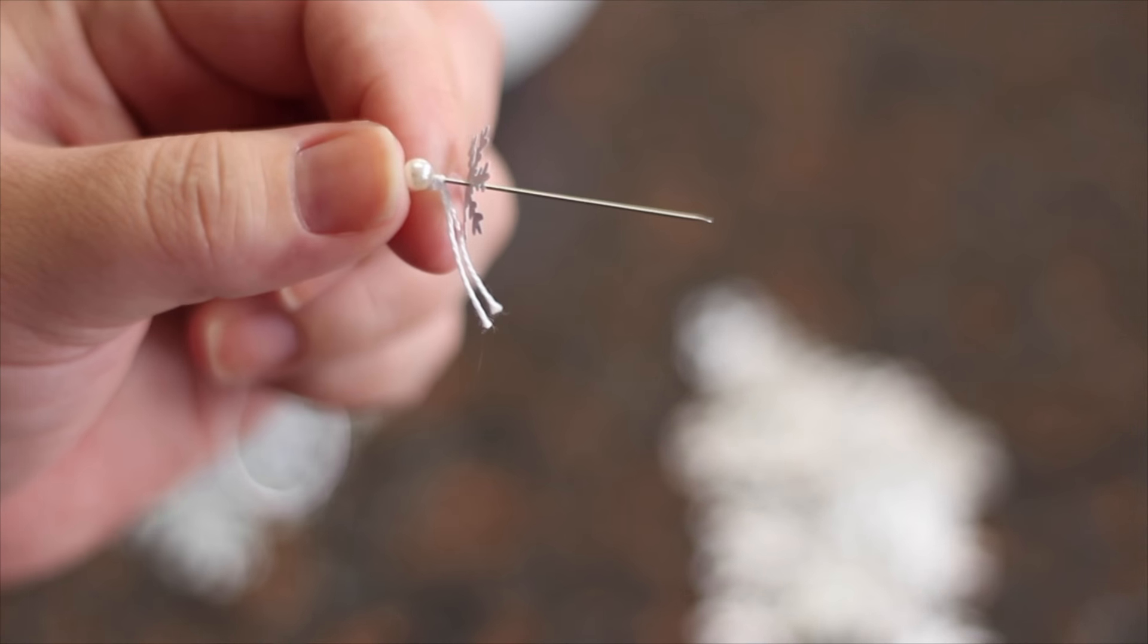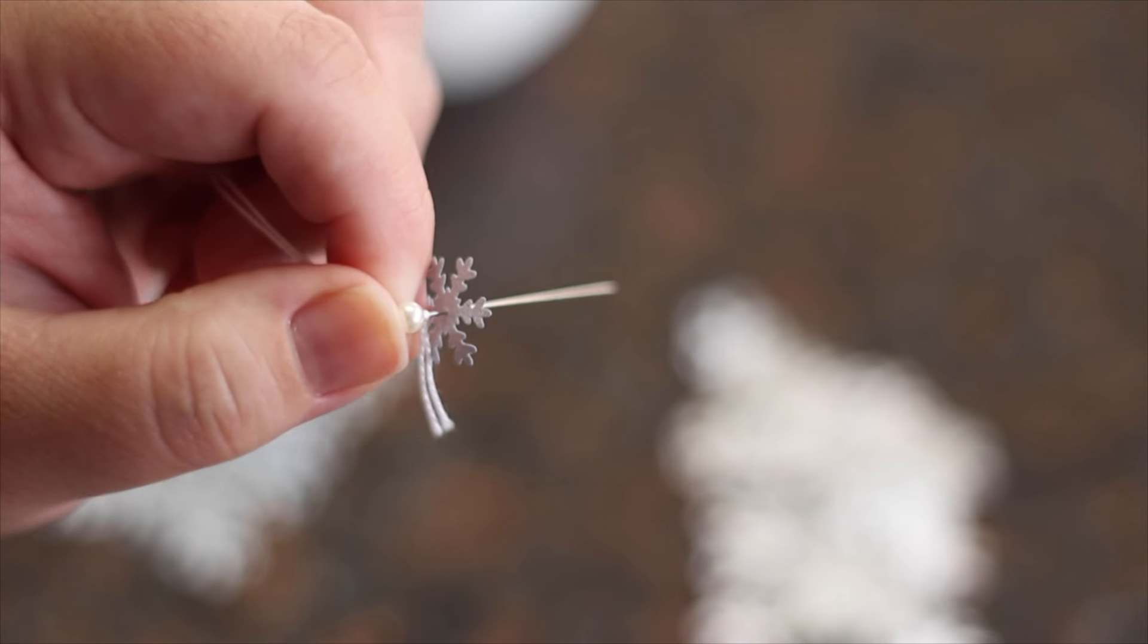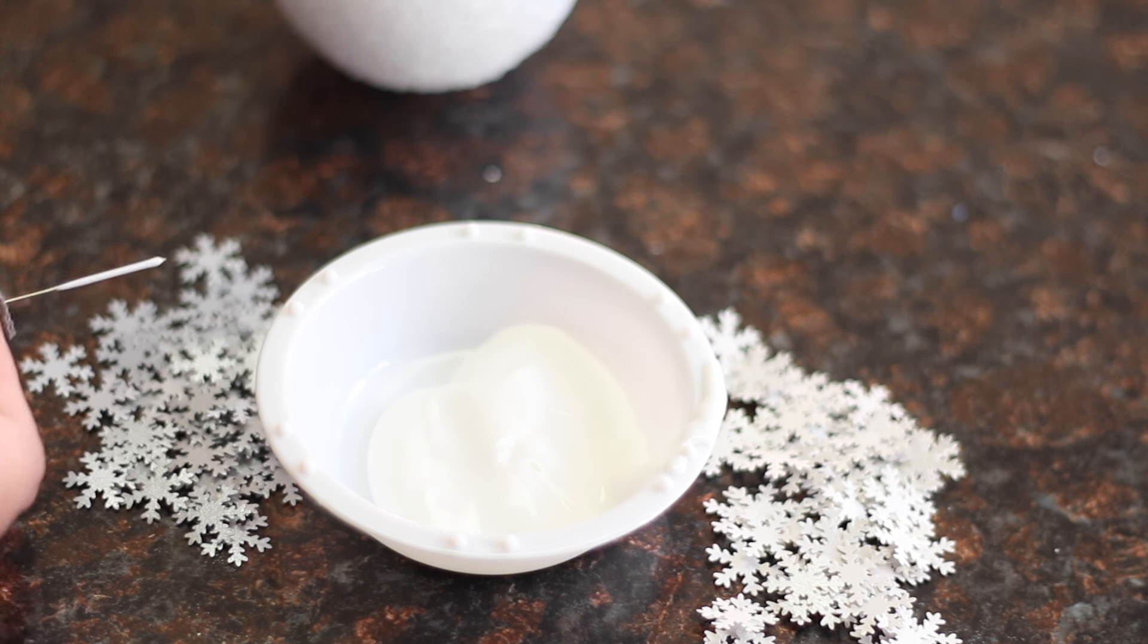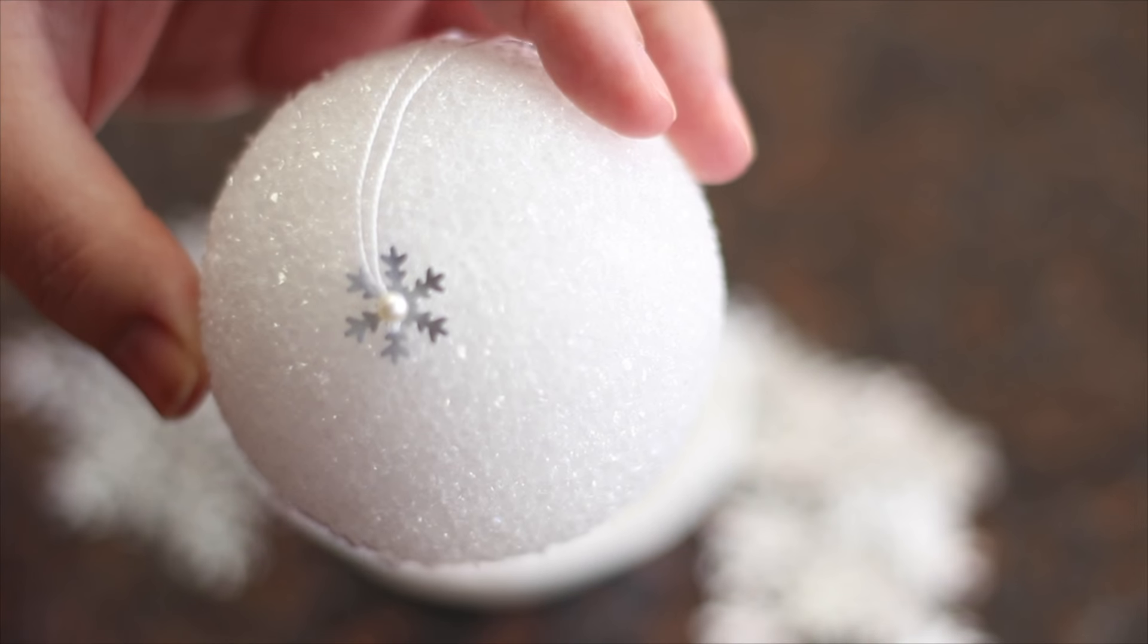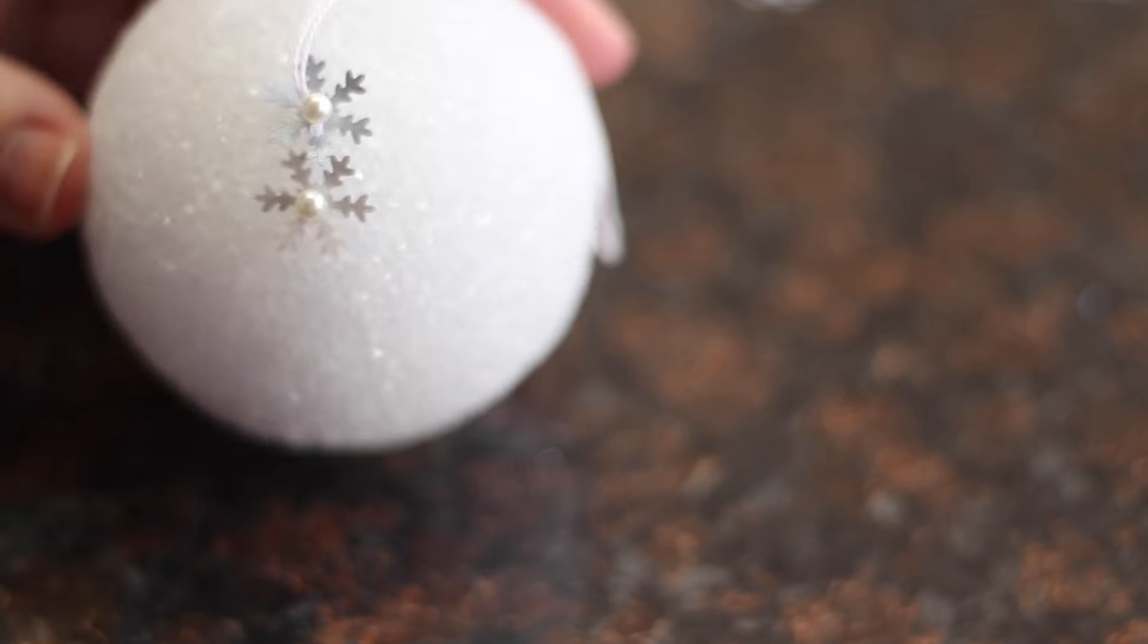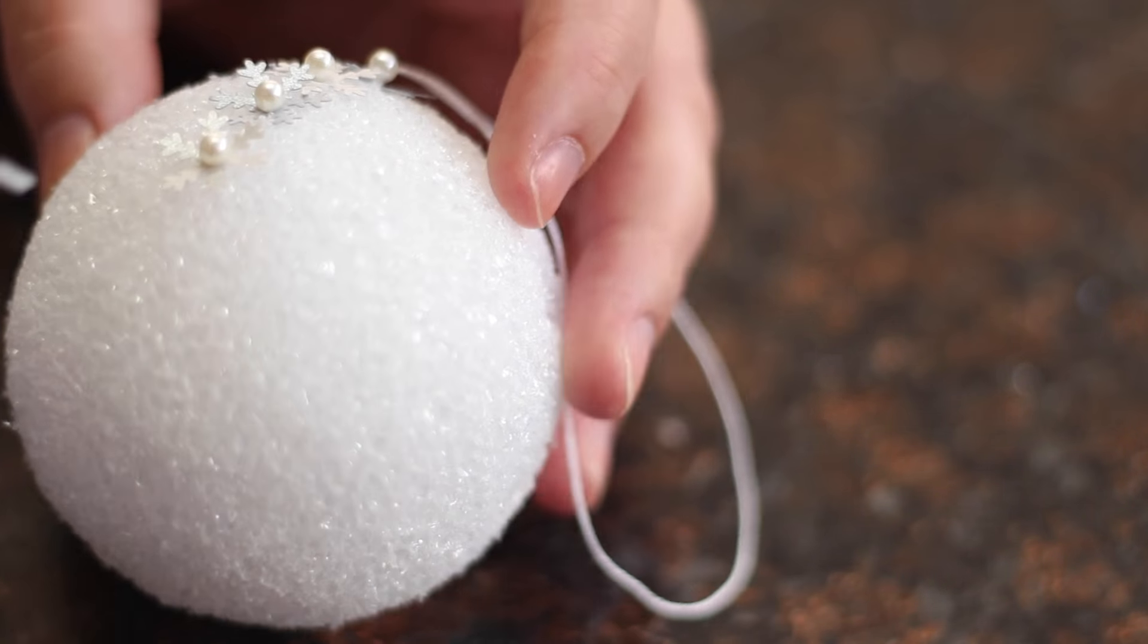Once you have all the snowflakes on the pins, you're ready to start putting them onto the ball. Dip the tip of the pin into some Mod Podge, then stick the pin into the styrofoam ball. You can do this in a very random order or you can create a pattern with the snowflakes. It's all up to how you feel.